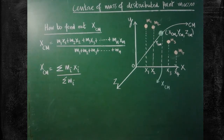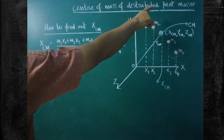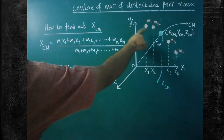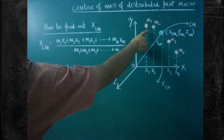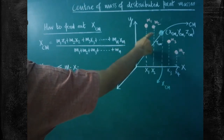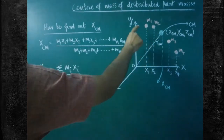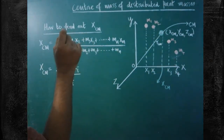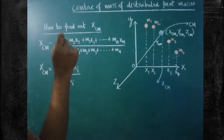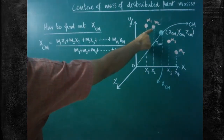The next topic is about the center of mass of distributed point masses. They are all different masses, called point masses, distributed in space — mass m1, m2, m3, m4. They are all separate point masses, negligibly small, occupying very small space. Such kinds of masses are called point masses.